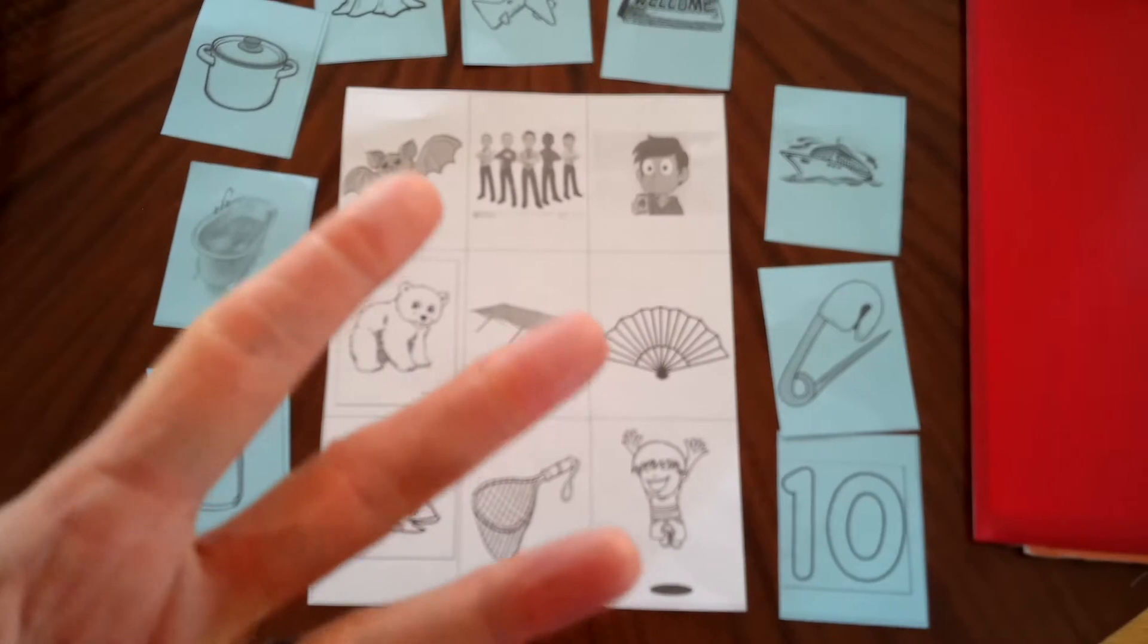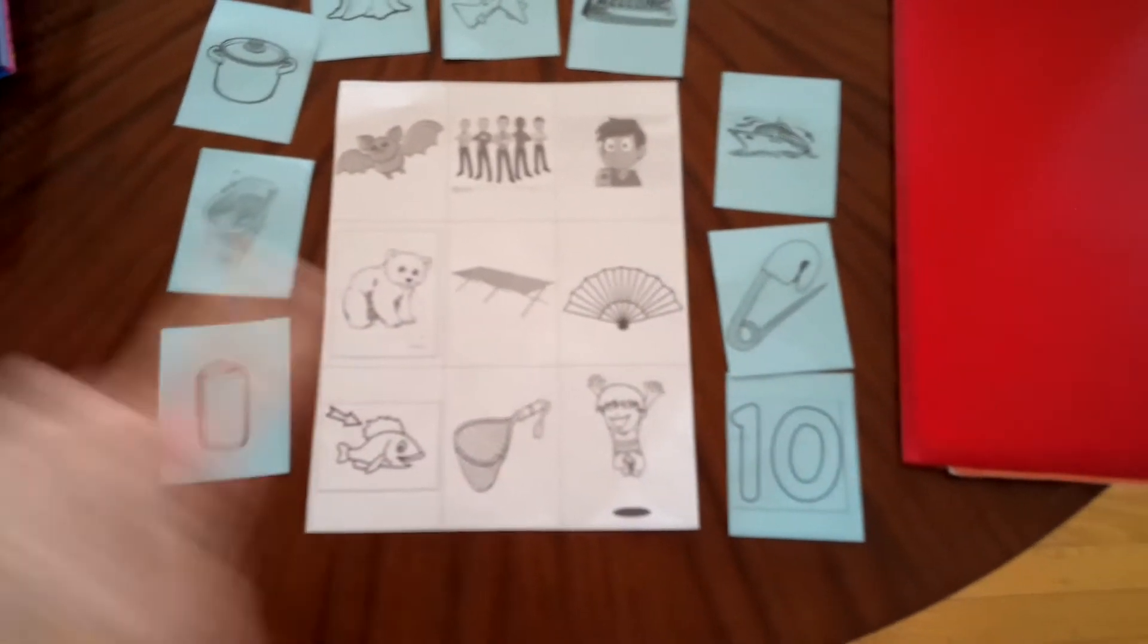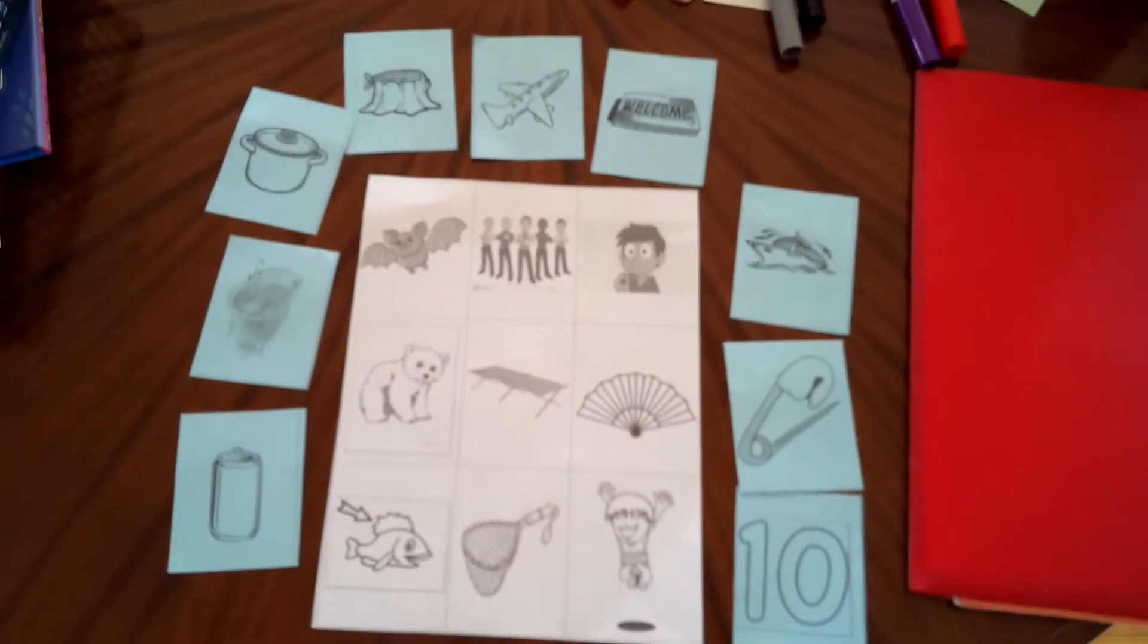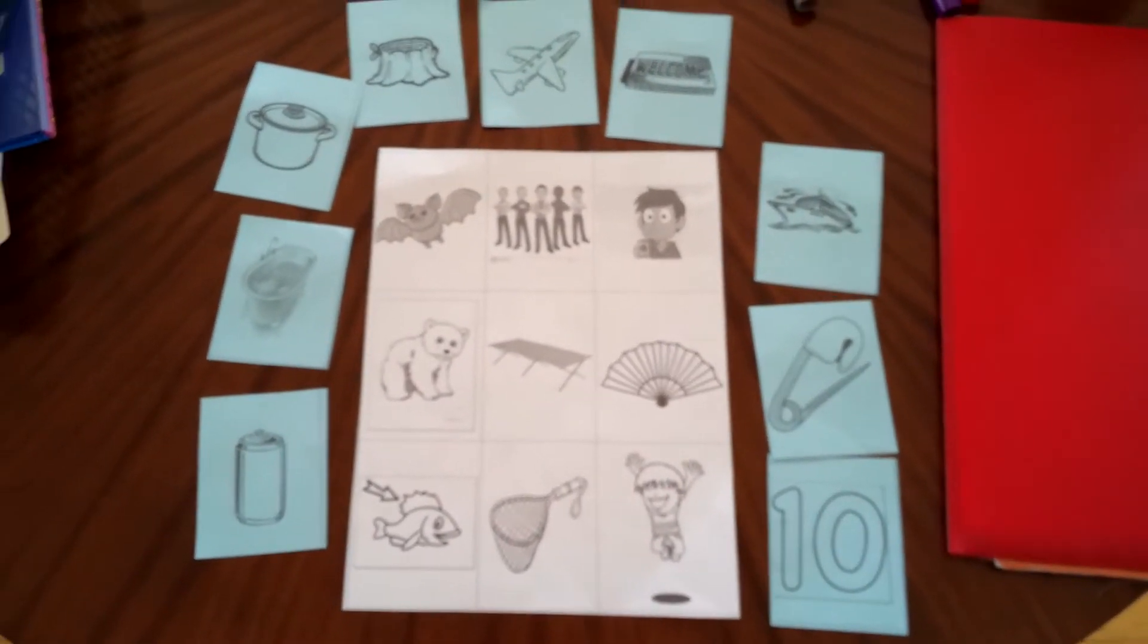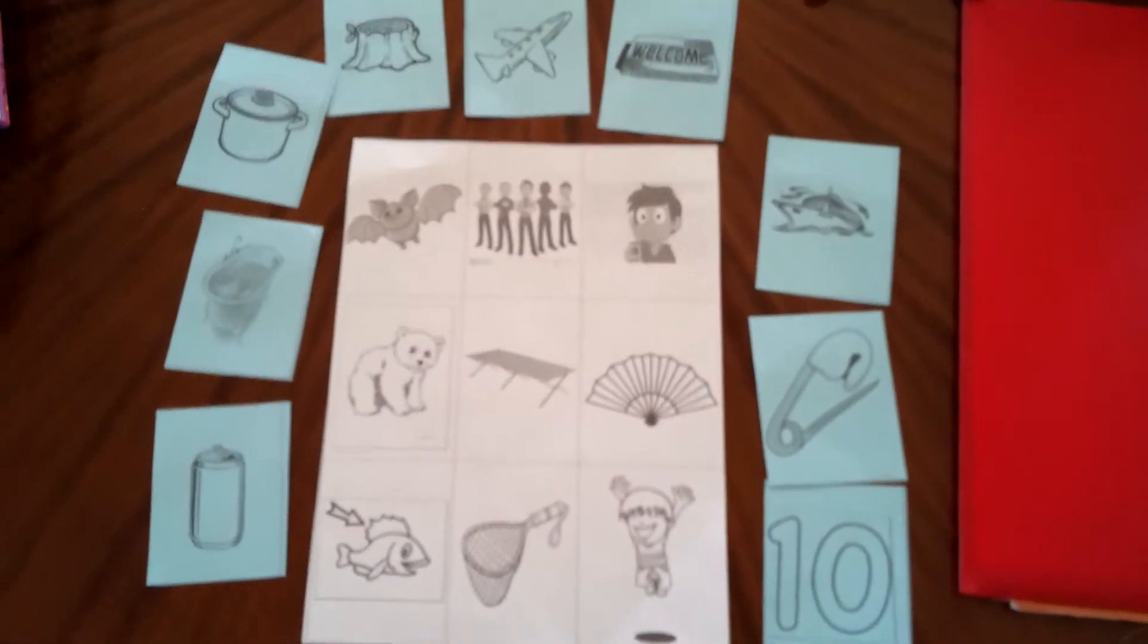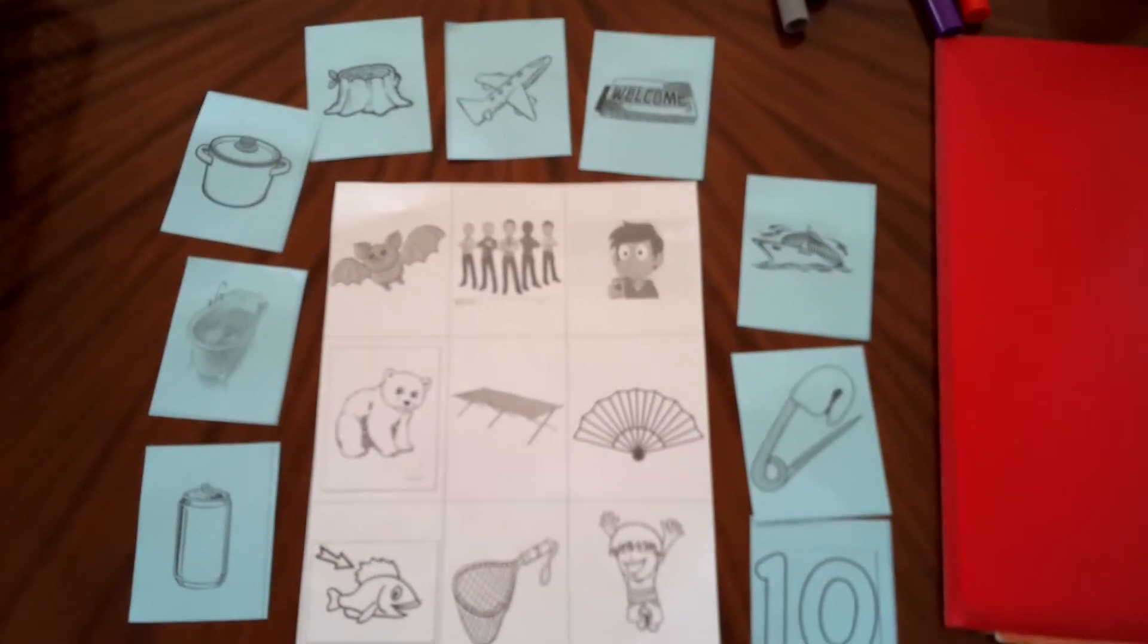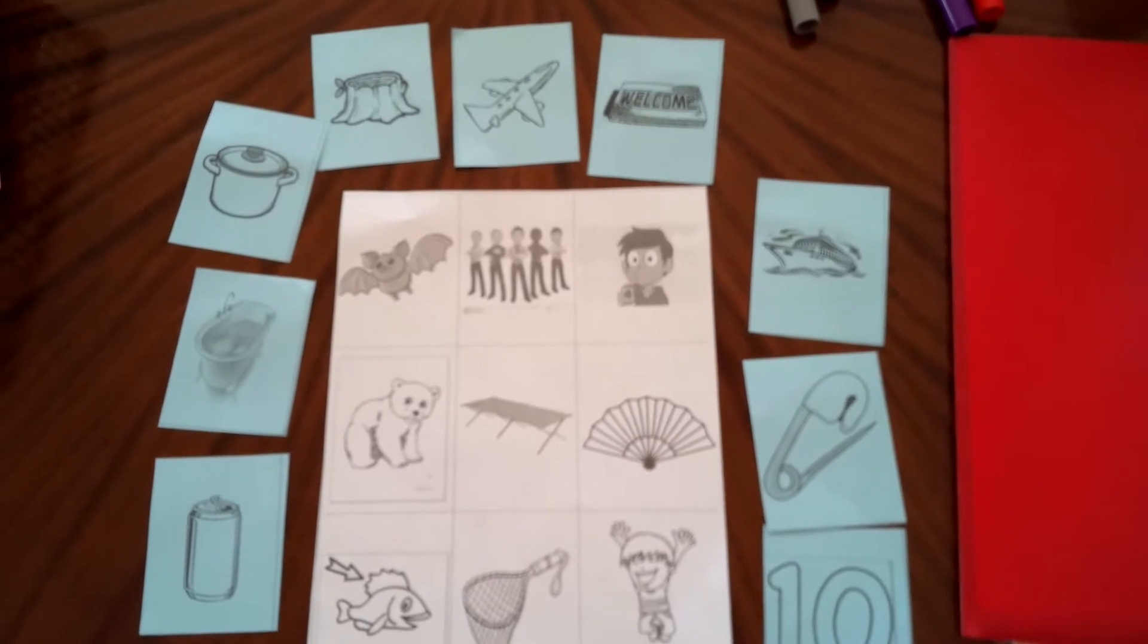Level three means I say a picture that you can't even see, but it rhymes with one of the pairs. So you have to hear the word I say and then check either the board or the cards and find a match and then put them together.